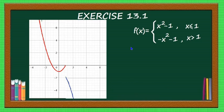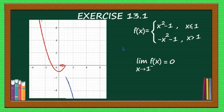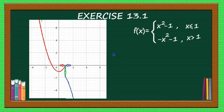Now let us see the graph of the function. The graph of f(x) equal to x squared minus 1 is shown in red. As x approaches 1 from the left side, f(x) is approaching 0. As x approaches 1 from the right side, f(x) is approaching minus 2. We see two different values for the left-hand limit and right-hand limit, therefore the limit does not exist in this problem.